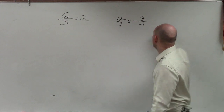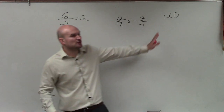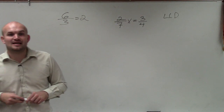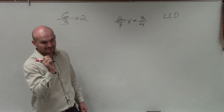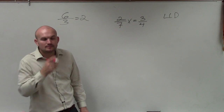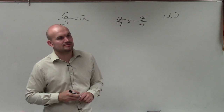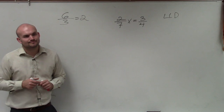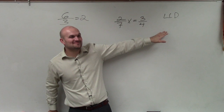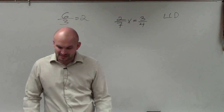We need to determine what we call the LCD — the least common denominator — the smallest number that both 7 and 4 divide into. The LCD is 28. You can just go through the multiples of 7 and 4, and the LCD is going to be 28.